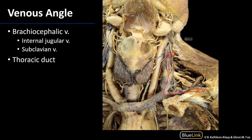Where these two vessels come together is an area known as the venous angle. The venous angle is the start of the brachiocephalic vein. The left brachiocephalic vein is much longer and more oblique than the right brachiocephalic vein. These two brachiocephalic veins come together to form the superior vena cava, or the SVC.